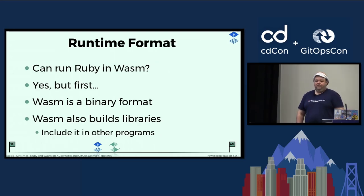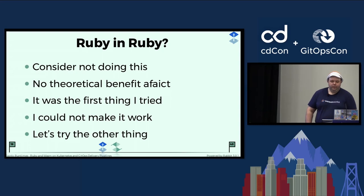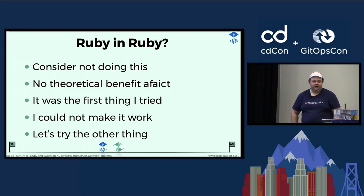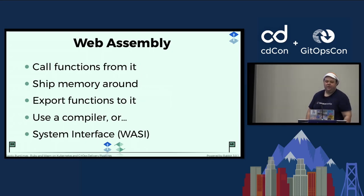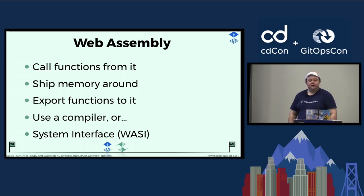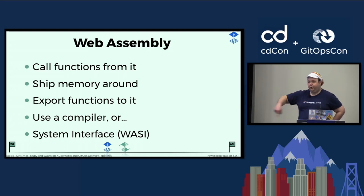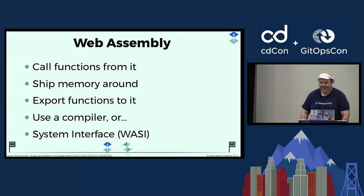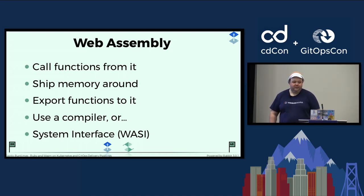WebAssembly is a runtime format. You can build applications and libraries with it, and you can include them in other programs. I did not know WebAssembly going into this talk — I had to learn how it works. WASMR had the best set of examples. With WebAssembly you can call functions in your library, export a function to it, and ship memory around. There's a thing called the system interface, WASI, which is very helpful and helped me solve many of the problems I encountered when trying to use WebAssembly with Ruby.